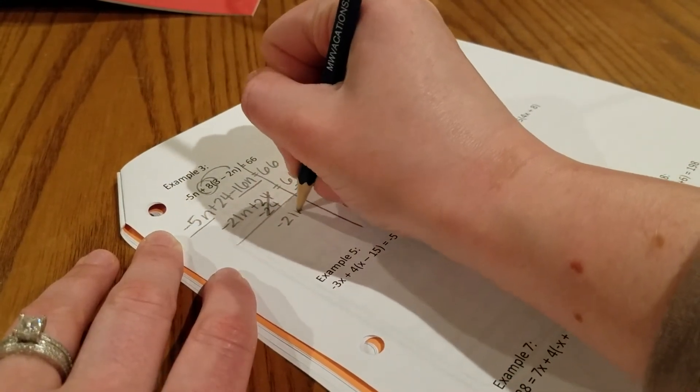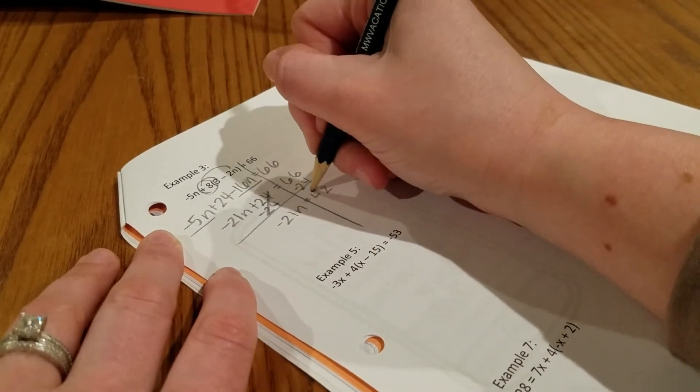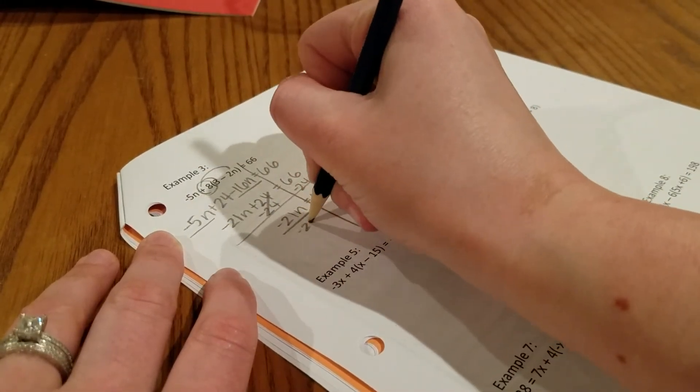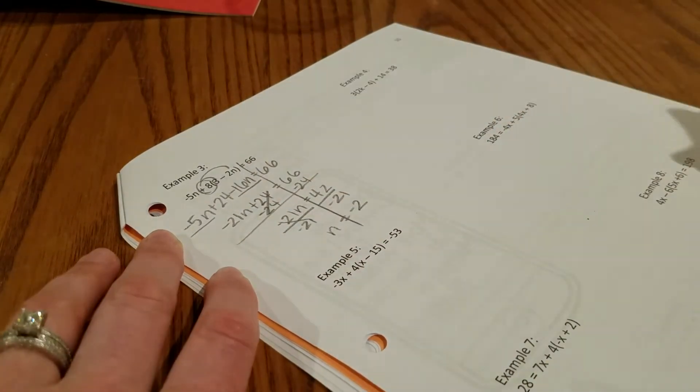So negative 21n equals 42. 42 divided by negative 21. We get n equals negative 2.